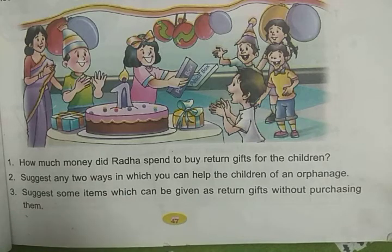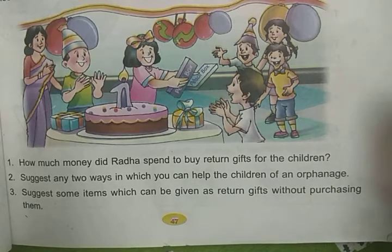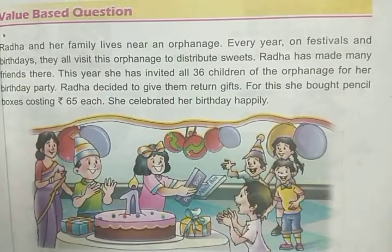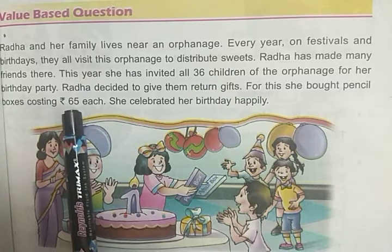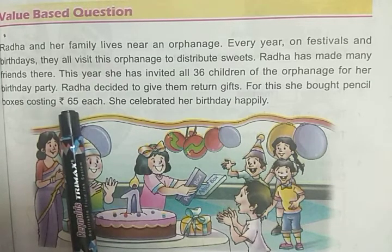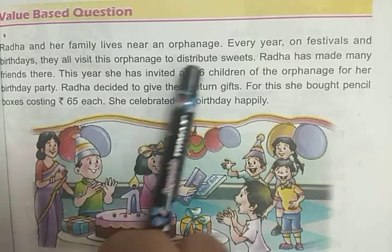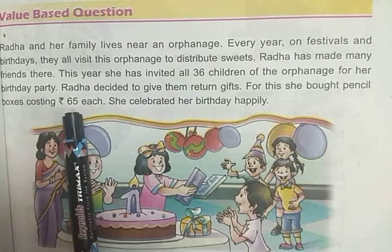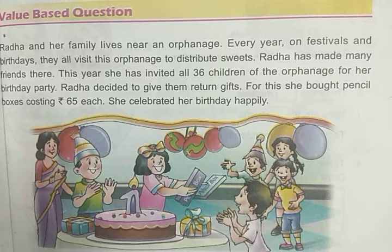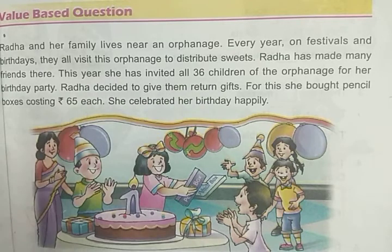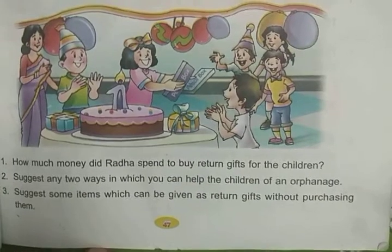The question is: how much money did Radha spend to buy return gifts for the children? We know the cost of one pencil box is 65 rupees, and she bought 36 pencil boxes. The cost of one pencil box is given and we have to find the cost of many pencil boxes — one to many. So what we have to do? Multiply 65 by 36. You will get the total money spent by Radha to buy return gifts. You can do it yourself.